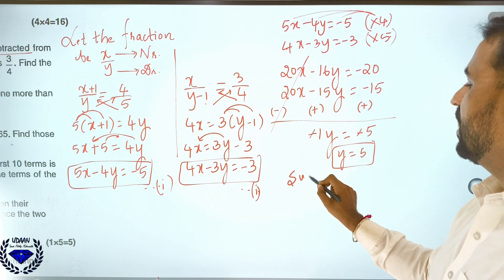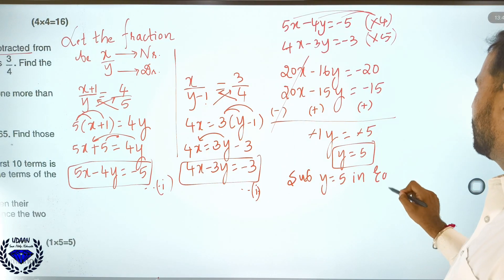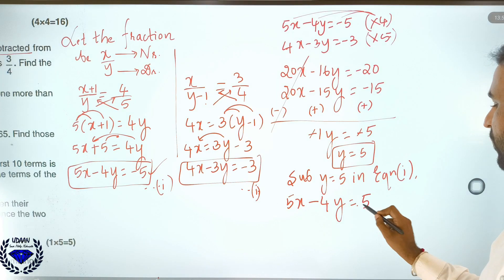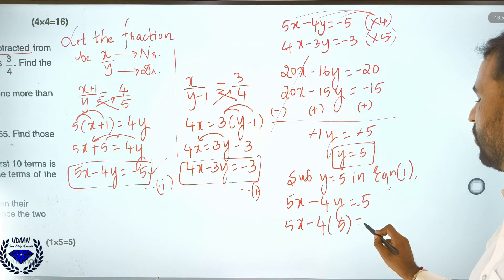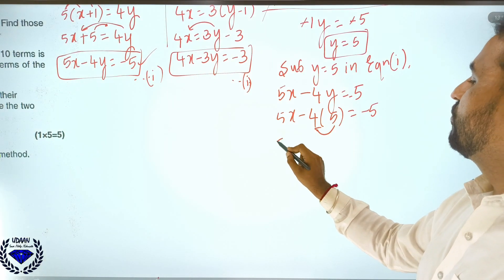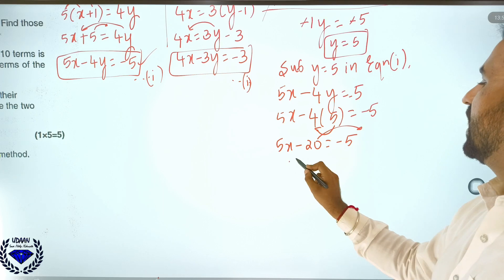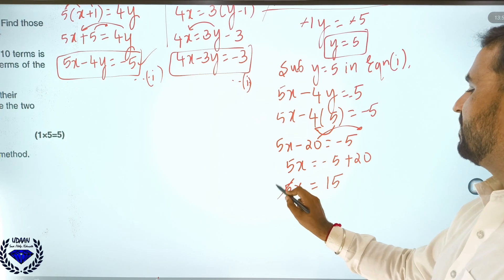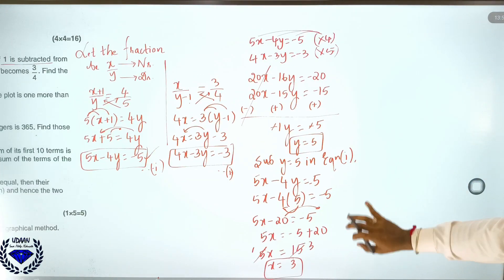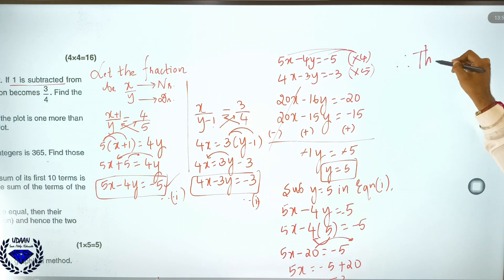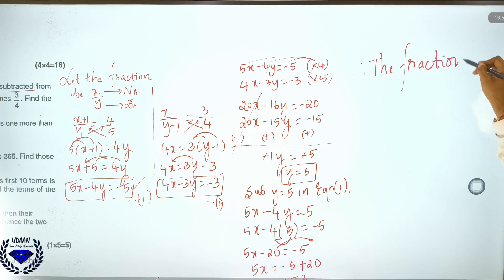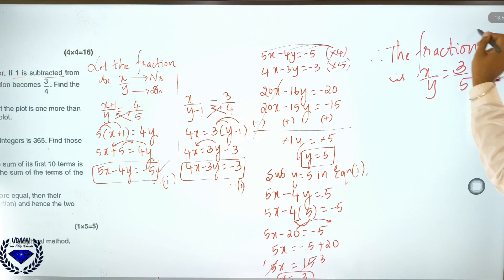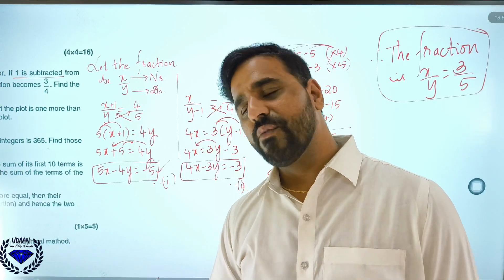Substitute y = 5 into equation 1: 5x − 4(5) = −5, so 5x − 20 = −5, then 5x = 15, so x = 3. We got x = 3 and y = 5. Therefore the fraction is x by y = 3 by 5. If you get 3 by 5, you will fetch 4 marks for this question.